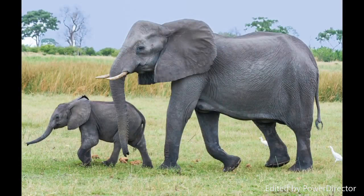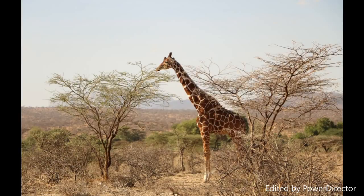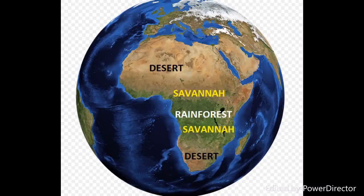In summer, the savannah experiences rainfall and high temperatures. The winters are dry and cooler. There are two extensive desert regions in Africa. These lie to the north and to the south of the savannah zones. The deserts are very dry with high temperatures.